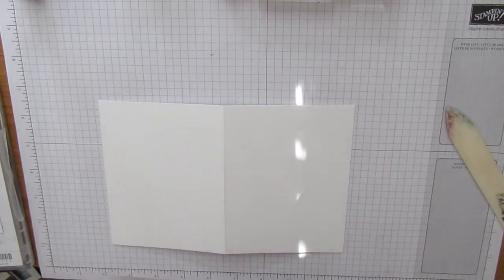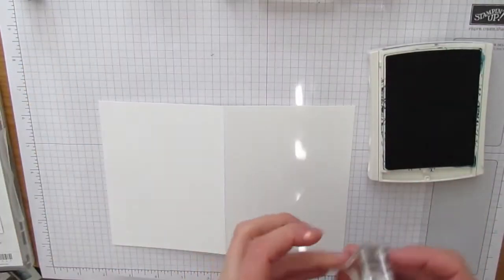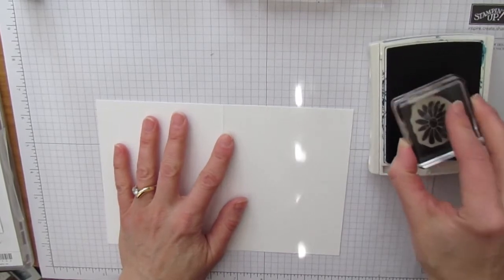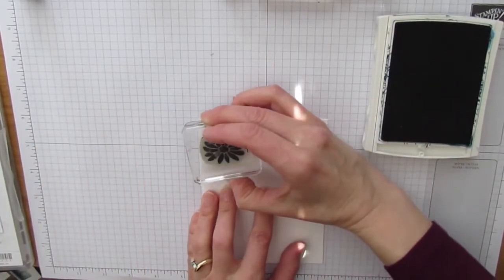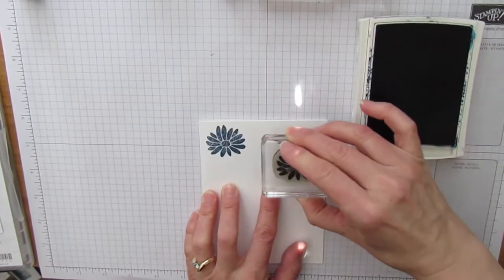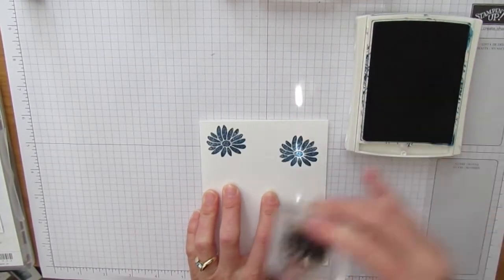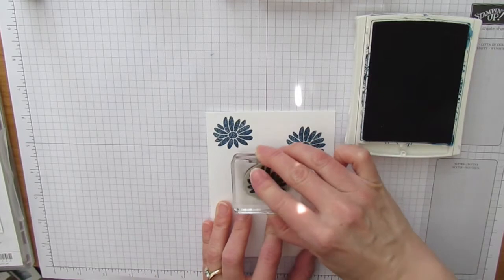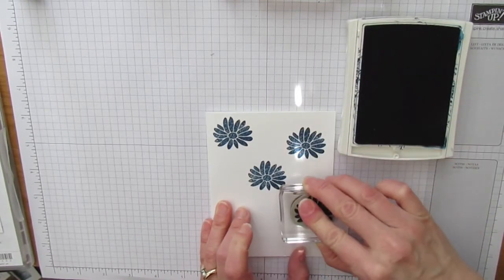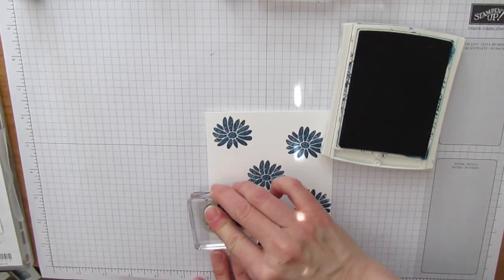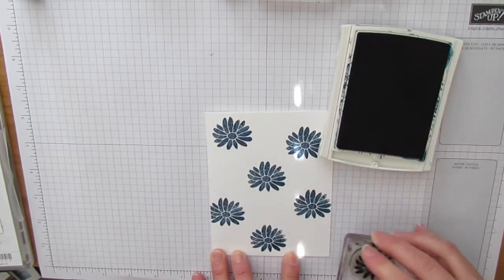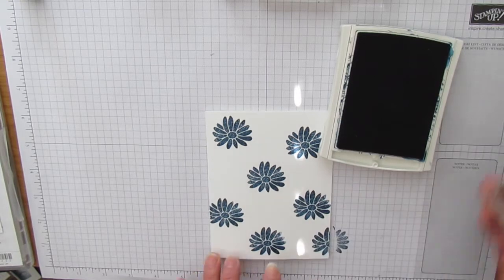The first thing I'm going to do is stamp my flowers. I'm using Dapper Denim Ink and I'm just going to put a bunch of flowers randomly. You can see that the stamp is kind of designed to give a nice soft image. It's not a totally solid image.